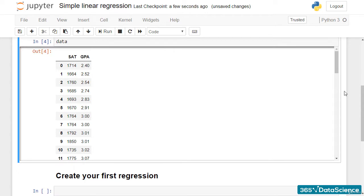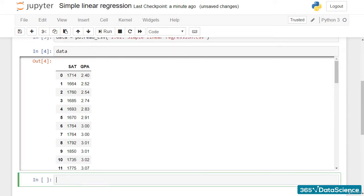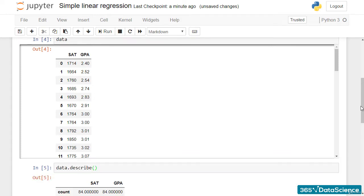There are two columns, SAT and GPA. And that's what our example will be all about. I'll further print data.describe, which is a pandas method to give me the most useful descriptive statistics for each column in the data frame.